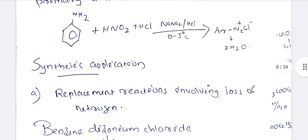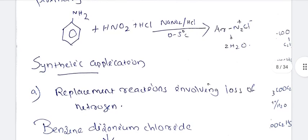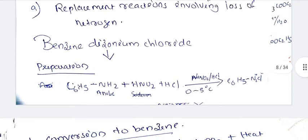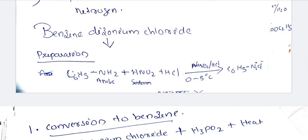Diazonium salts are important for synthetic applications. For benzene (C6H5) as the primary amine: treating with HNO2 and a small amount of HCl gives NaNO2/HCl, and the aromatic ring gives ArN2Cl — benzene diazonium chloride.